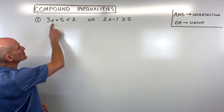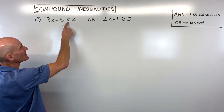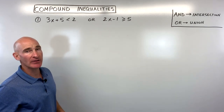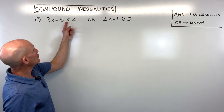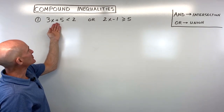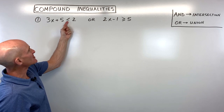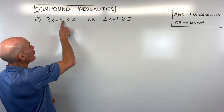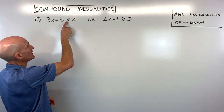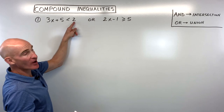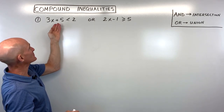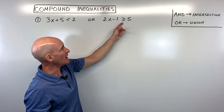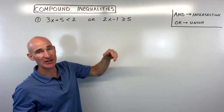The first example is an 'or' type: 3x plus 5 is less than 2, or 2x minus 1 is greater than or equal to 5. When you look at the less-than symbol, it looks like the letter L for 'less than', points to the smaller quantity like an alligator going after the larger quantity. The greater-than-or-equal-to symbol is like half of an equal sign.